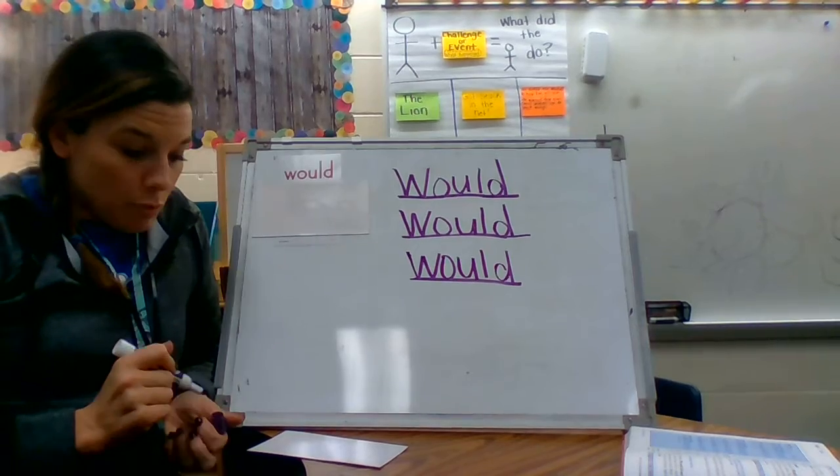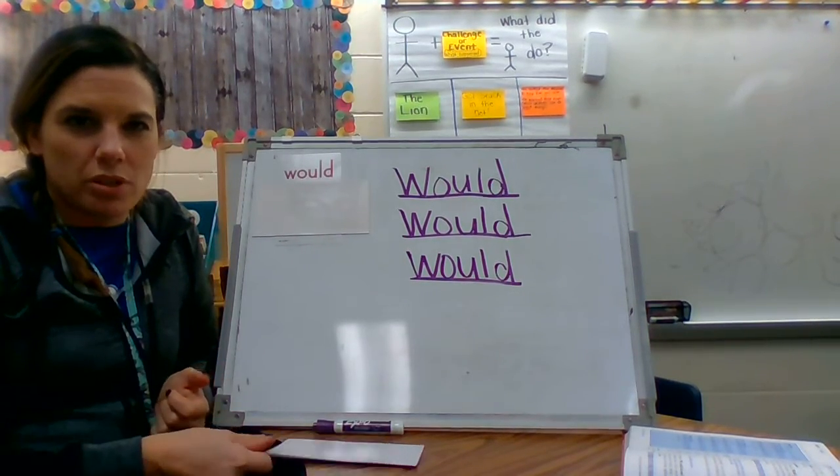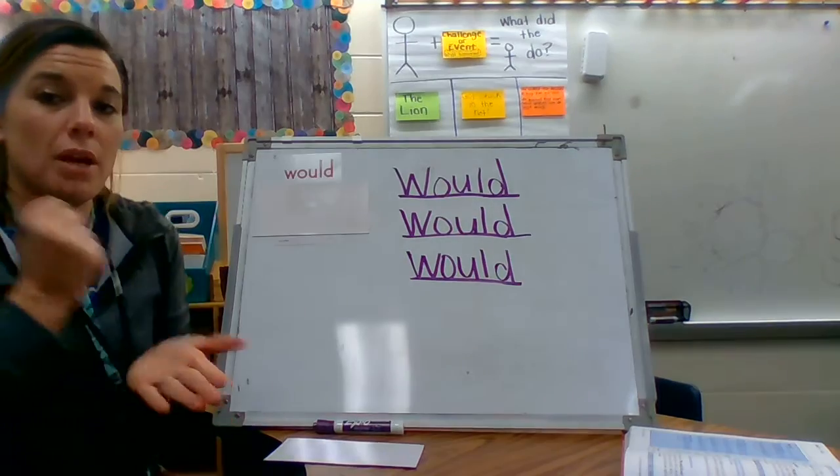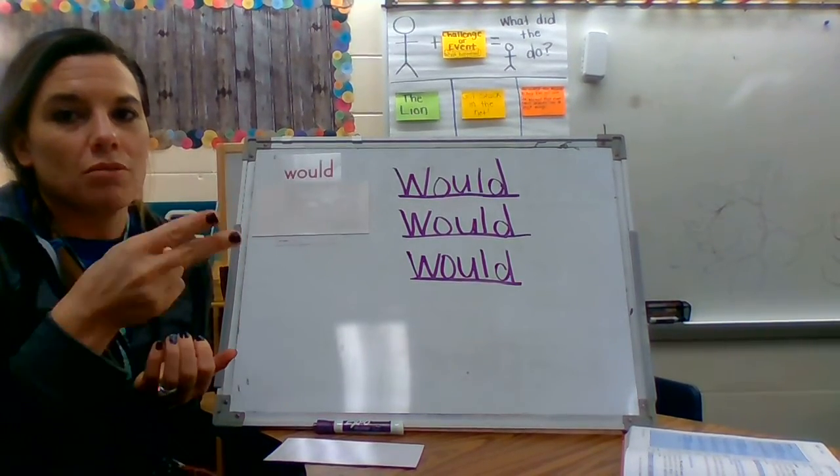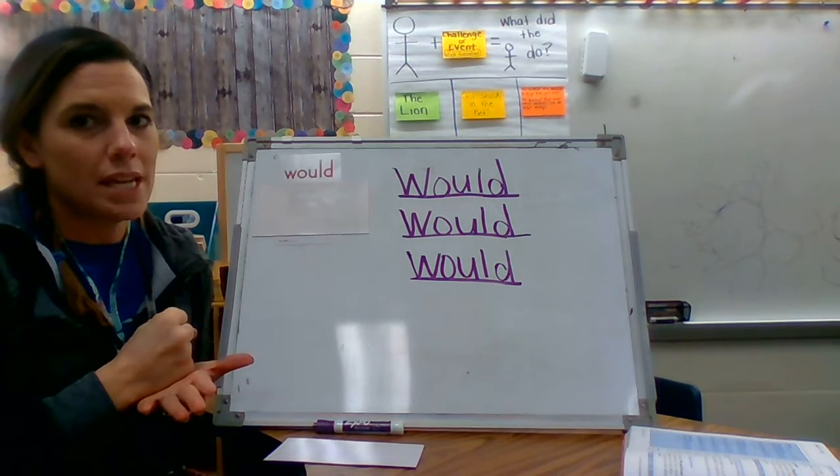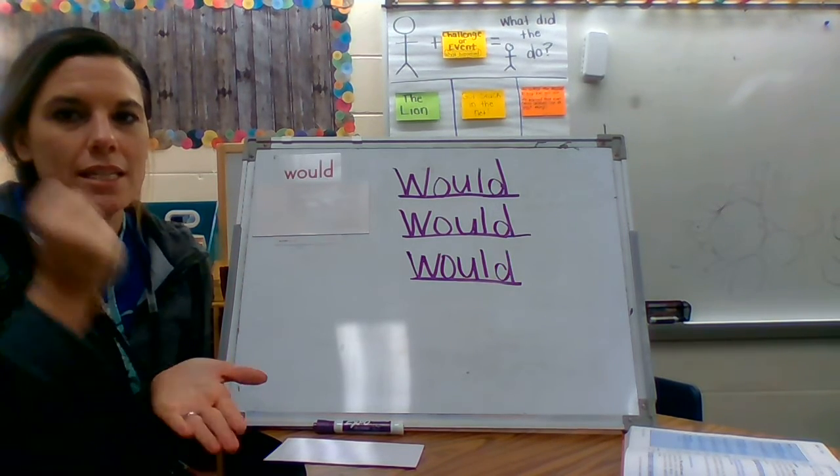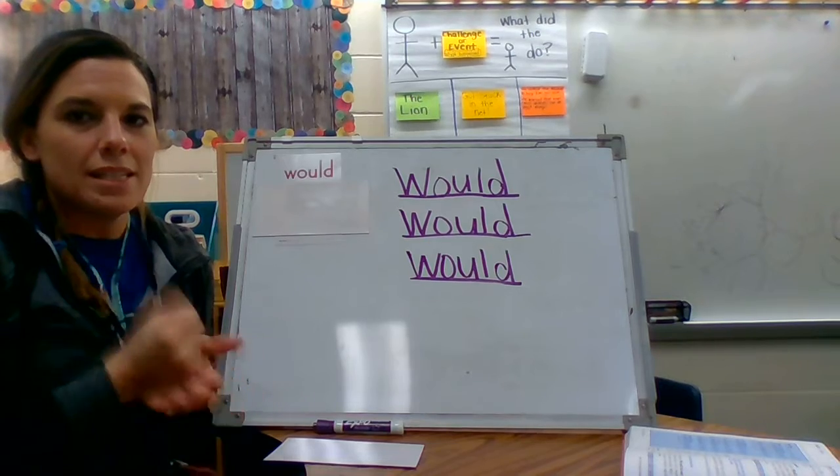We are going to play trick word rock, paper, scissors with the word would. Remember, we spell it, and then when we say the whole word, we shoot either rock, paper, or scissors. We're going to play three times. Are you ready? Here we go. W-O-U-L-D. Would. I did paper.